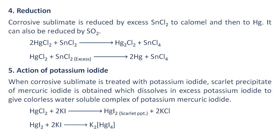Action of potassium iodide: When corrosive sublimate is treated with potassium iodide, a scarlet precipitate of mercuric iodide is obtained, which dissolves in excess potassium iodide to give a colorless water-soluble complex of potassium mercuric iodide.